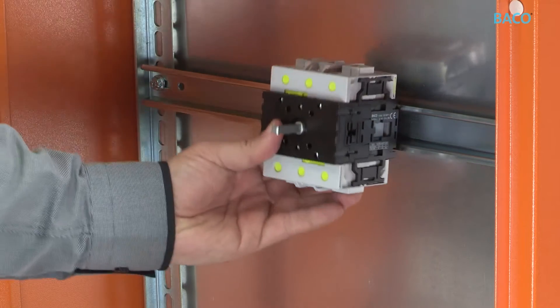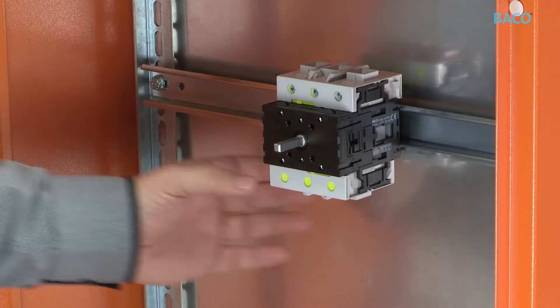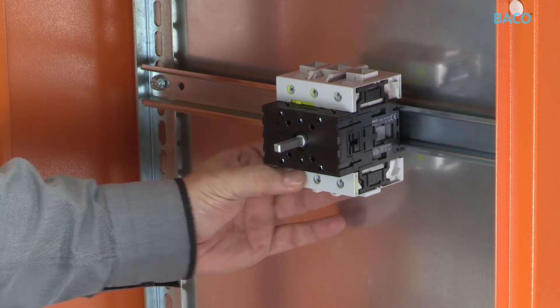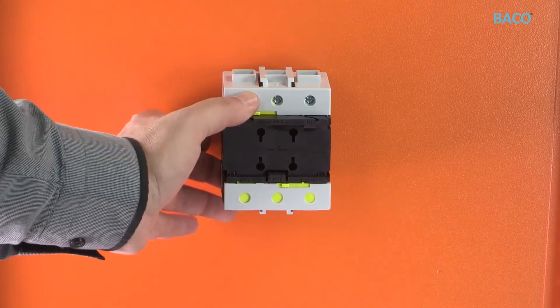Let's take another look at a unique feature which characterizes BACCO disconnect switches. The reversible terminals enable either front or rear mounting simply by sliding the terminal bars.